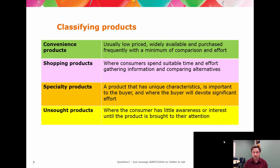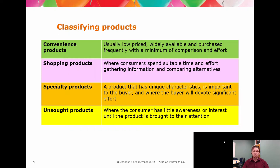That would stop it being a convenience product and move it into the specialty category, where you could use limited distribution, limited supply options, and change the price. Similarly, if you have a specialty product you want to turn mass market, you can scale up production, reduce the price, and expand distribution channels — going from specialty to convenience. You can move these around. Once a product is in one category it's not bound there forever, but shifting between categories requires changes to the product offer and probably the rest of the marketing mix.